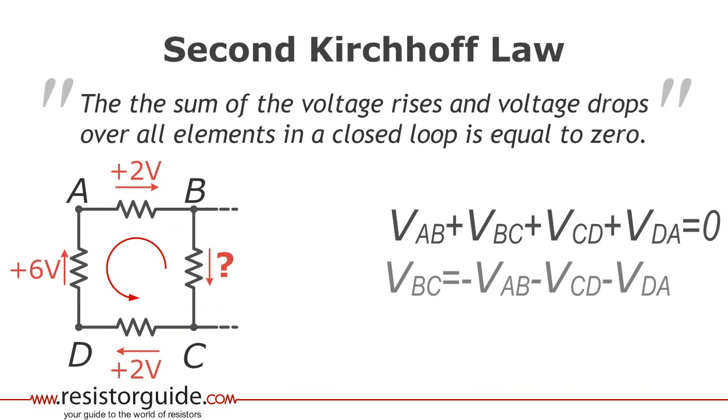Suppose now that the voltage rise between A and B is 2 volts, between C and D also 2 volts, and between D and A 6 volts. We can now easily calculate that BC is minus 10 volts.